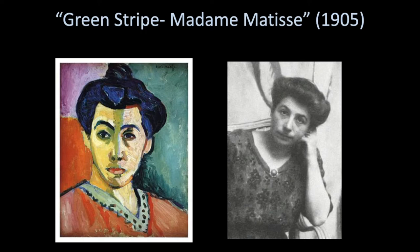Green Stripe, Madame Matisse. You can see here we have the realistic version of what the person looked like. Here on the right, this is an actual photograph. And then we have his painting. Again, those are very bold and bright colors.